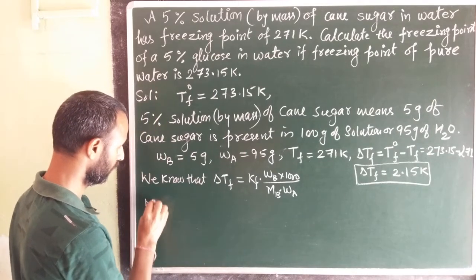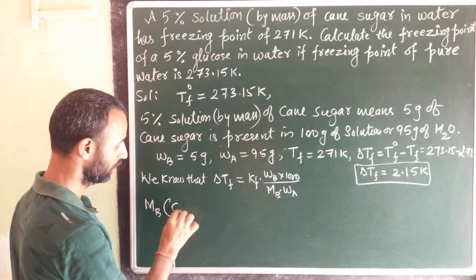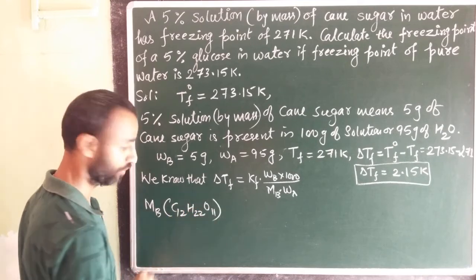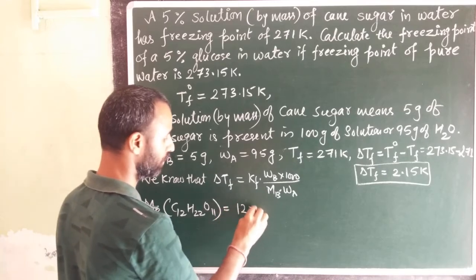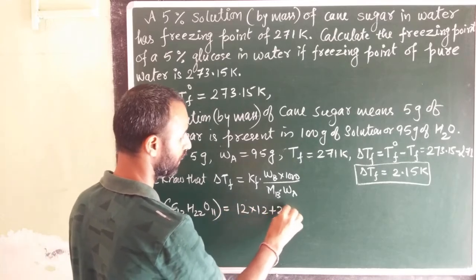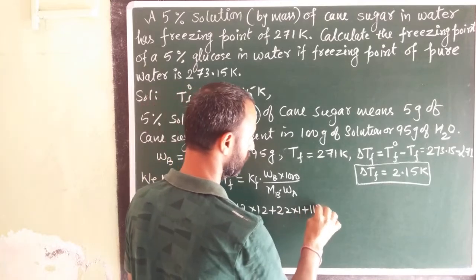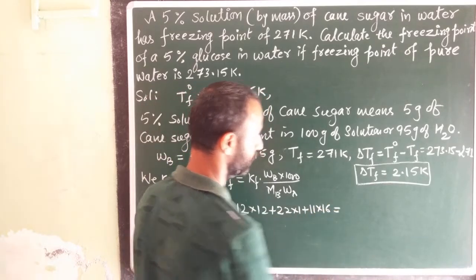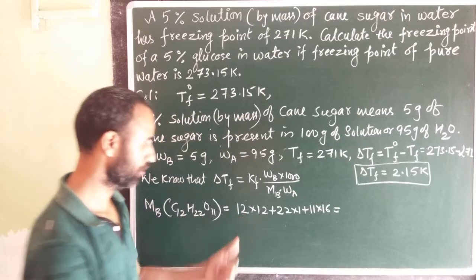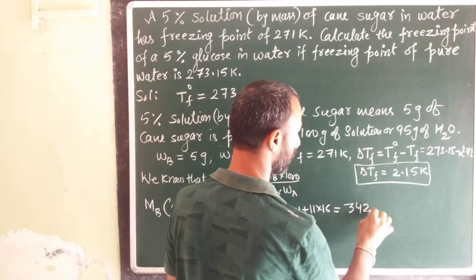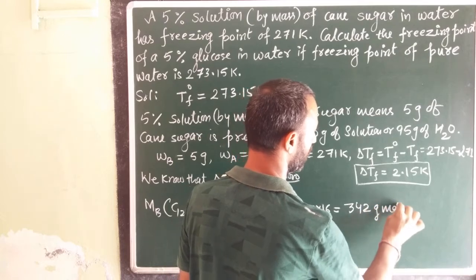Cane sugar is sucrose C12H22O11, so that is 12 into 12, 22 into 1 plus 11 into 16. It comes out to be 342 gram per mole.